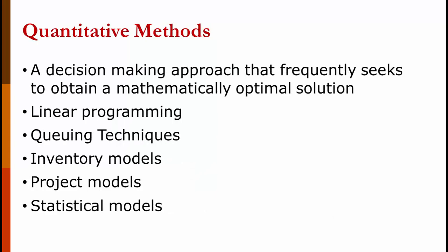Quantitative methods is a decision-making approach that frequently seeks to obtain a mathematically optimal solution. In other words, it tries to find the single best solution given a set of inputs. Some of the ones used in operations management include linear programming, queuing theory—also known as waiting lines—inventory models like the economic order quantity model, project management models, and statistical models.